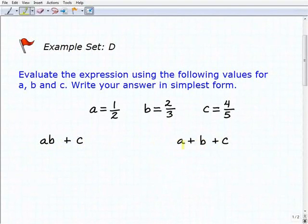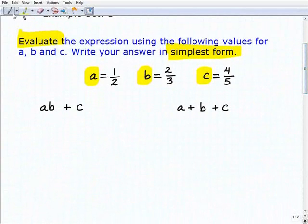So we can't do anything with these expressions as they are, but if we're given values—for example A equals one-half and B equals two-thirds and C equals four-fifths—well what we're going to do is replace these variables with these particular values and then work the problem. That's what it means to evaluate. And then lastly, if we have any answers that are fractions, we're going to make sure we write them in simplest form. In other words, we're going to fully reduce our fractions.